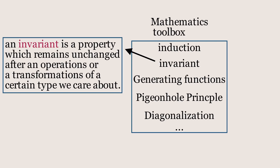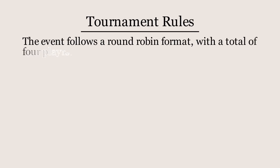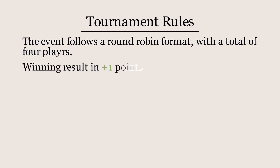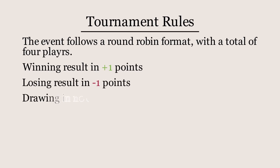For a very simple example, say you were following a chess tournament where the winner of each game gains a point and the loser loses a point, with no change to the score in the case of a draw. And the question crosses your mind: is it possible for all the players to finish with a positive score? After a moment of thinking, it seems obvious that no, you can't — but how do you prove that?